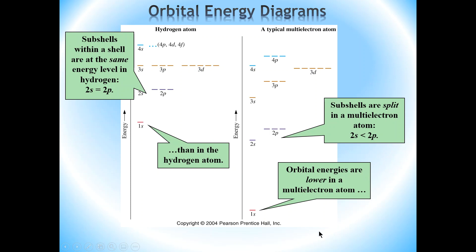When it comes to a multi-electron atom, there are two differences compared to the hydrogen atom. The first difference is that all the shells have their energies closer to the nucleus — their energies are significantly lower compared to the hydrogen atom. So the first shell, which is at a certain energy level in hydrogen, would be lower in energy in a multi-electron atom. The same is true for all the other shells.